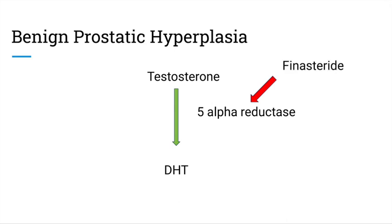To treat BPH, we use 5-alpha reductase inhibitors such as finasteride. Finasteride reduces prostate volume and improves urinary flow. When a patient is given finasteride, there is a decrease in DHT. Because DHT exerts most of the testosterone effects, when it is decreased this can cause androgen deficiency side effects such as decreased ejaculate volume.